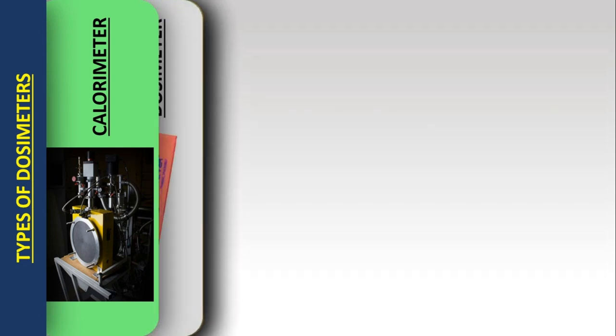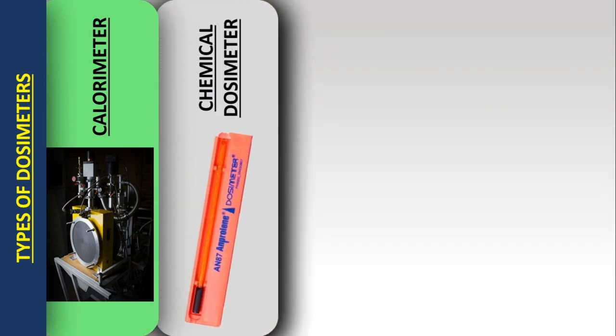Chemical dosimeter: in a chemical dosimeter, the absorbed dose is determined from the change in the solution. The solution consists of ferrous sulphate and the absorbed dose depends on the oxidation of ferrous ions into ferric ions.